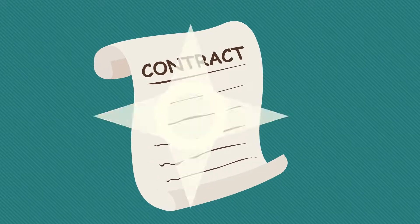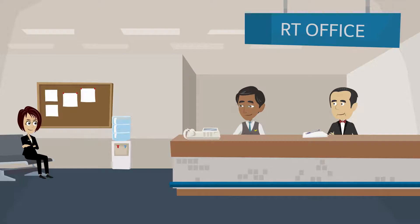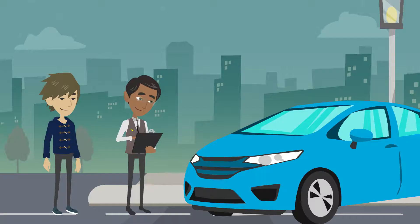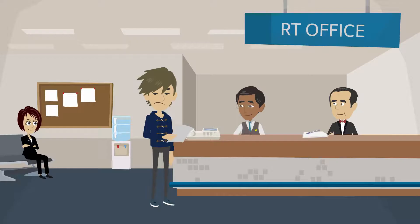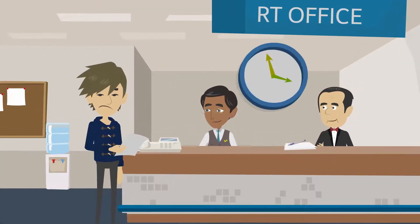A revolutionary transformation could take place in the future with the help of smart contracts. For example, say you bought a new car — the ownership of the car has to be registered with the RTO. The road transport officer registers the ownership of the car and gives you the registration number. Currently, this process is done manually, which is time-consuming, and the data is stored in a centralized database.